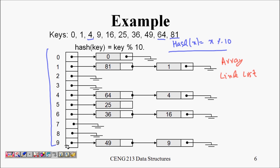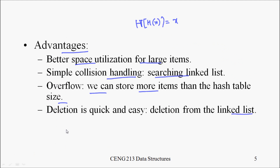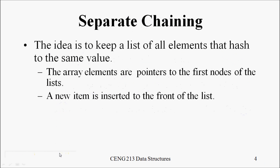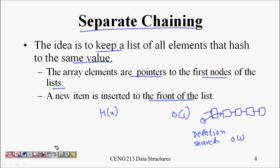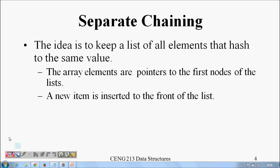In our next lecture we will look at other ways of storing elements, but separate chaining is the first way of handling collisions in hash tables. I hope you understand this — thanks a lot.